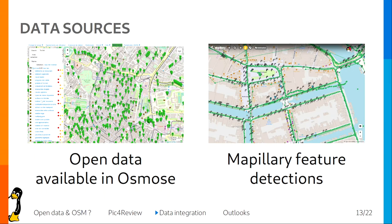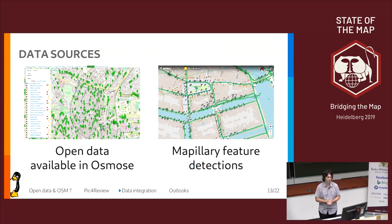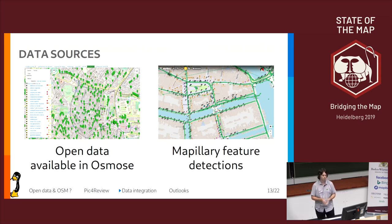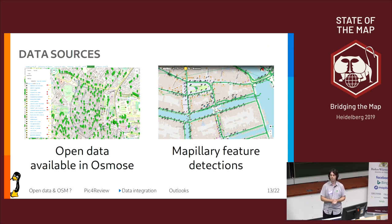The data sources are mainly open data available from the Osmos tool — there was another presentation of Osmos during the event. What it does is take the open data, look at OpenStreetMap data, and identify what is missing or what is already in the database and can be completed — it makes a conflation. We can also use Mapillary feature detection, for example detection of streetlights, benches, and so on.